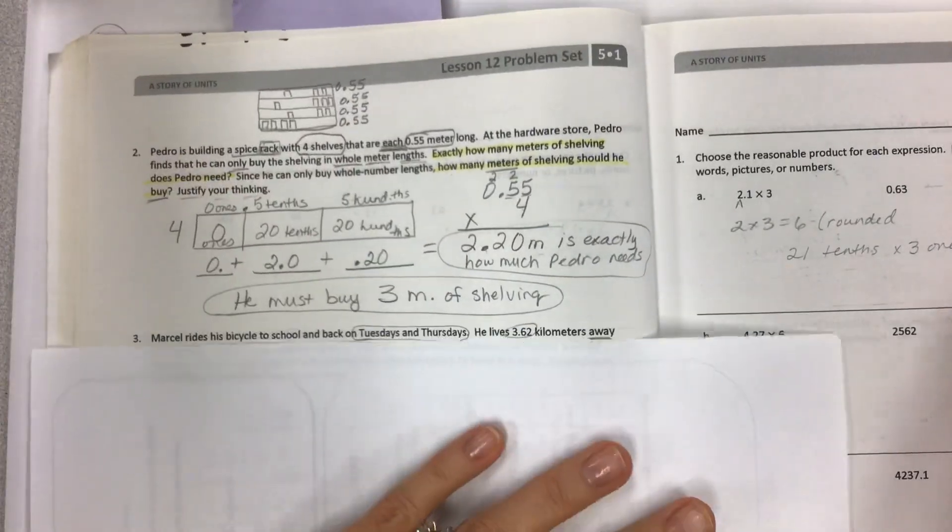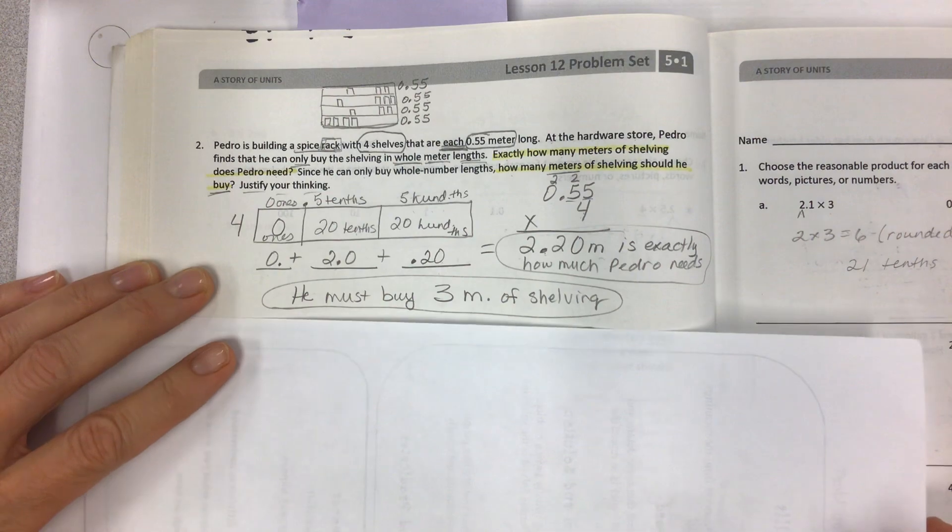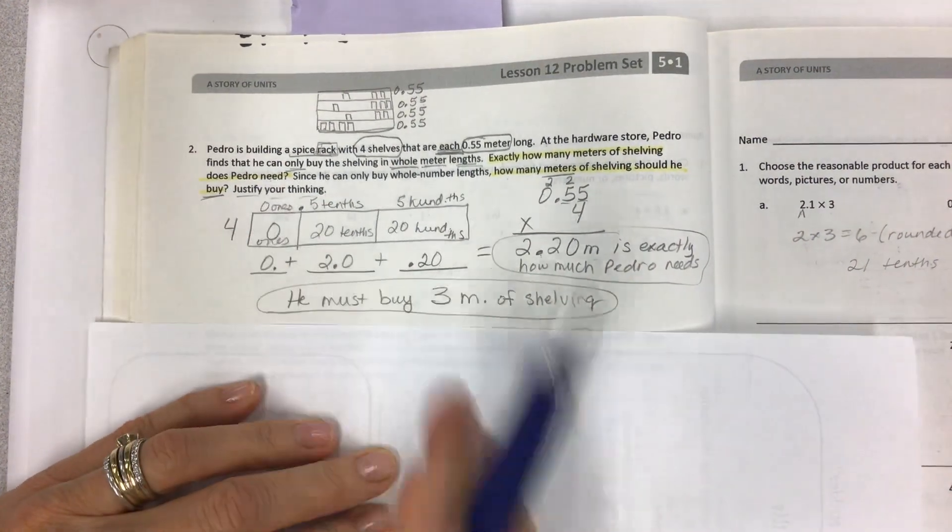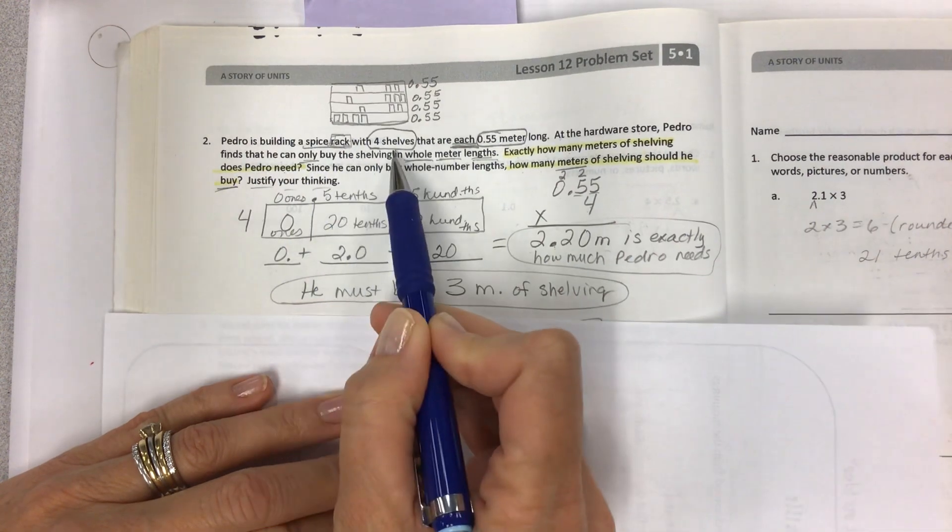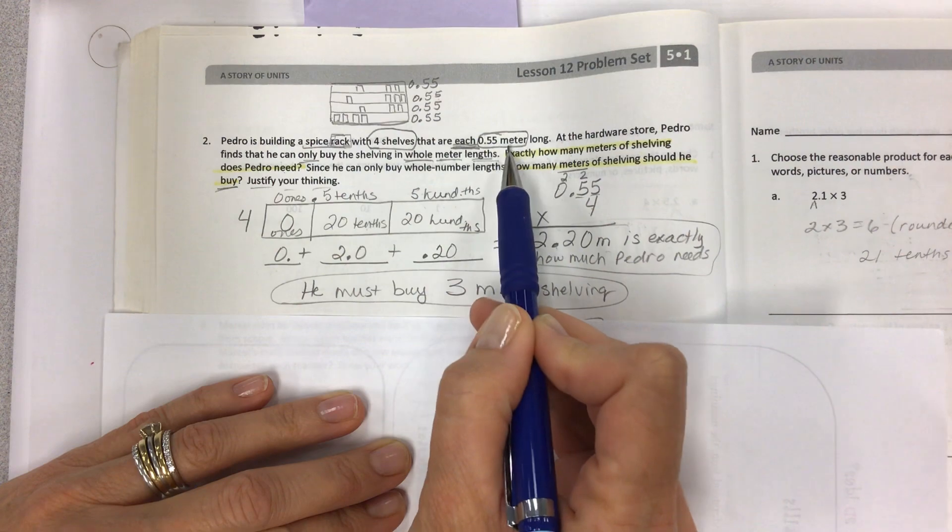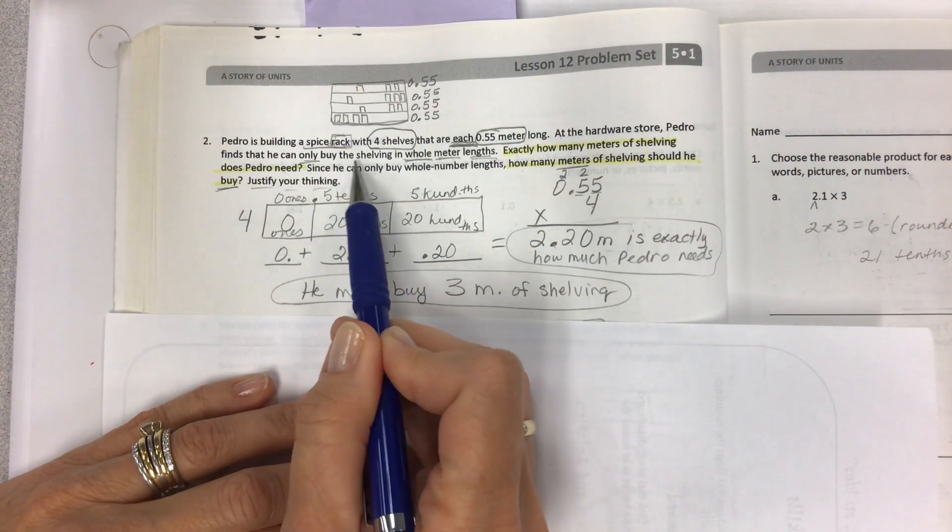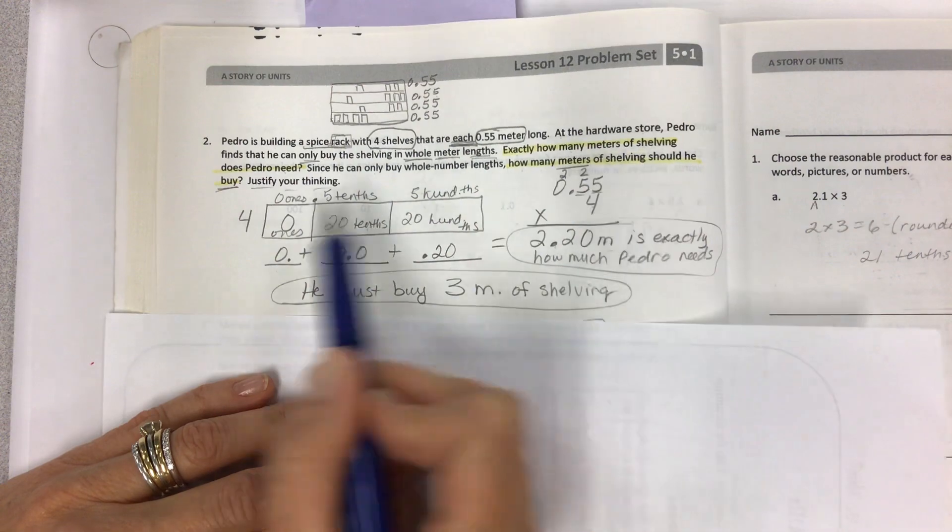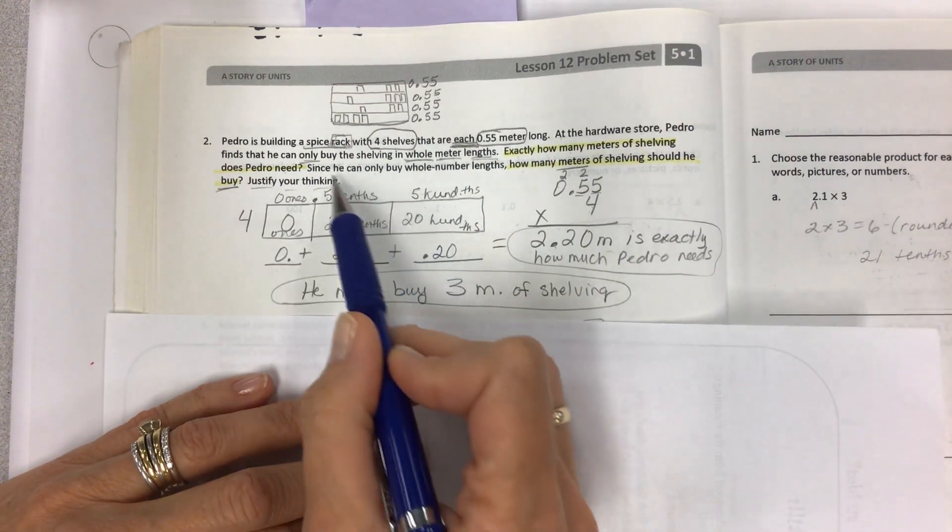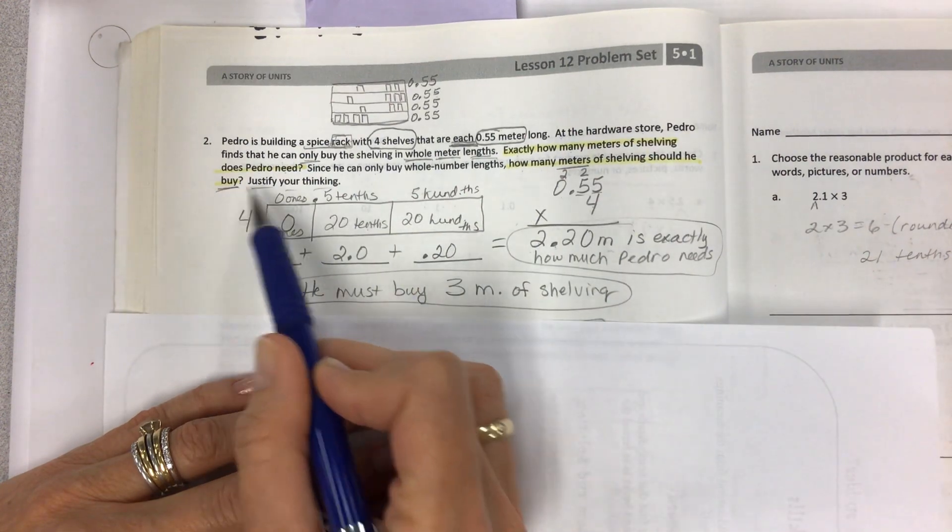And notice today I'm using the book that's already done. So that should make it easy. I don't have any notes today, but we'll talk in class tomorrow before we get started. We won't have too many notes, if any. So then we get to the word problems. Now this is where obviously you can see we have a little bit of work to do. So Pedro is building a spice rack with four shelves that are each 55 hundredths of a meter long. At the hardware store, I always like to say Home Depot right down the street, Pedro finds that he can only buy the shelving in whole meter lengths. And we talked about this, like you can't always buy the exact length. So exactly how many meters of shelving does Pedro need? We will set it up here and solve.